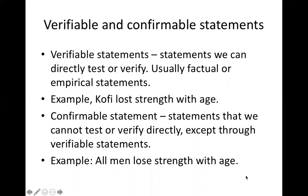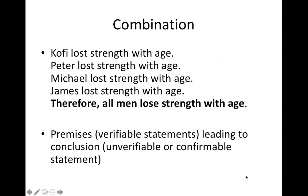Verifiable statements are statements we can directly test or verify; they are usually factual or empirical statements. Example: 'Kofi lost strength with age.' Confirmable statements are statements we cannot verify directly, except through verifiable statements. Example: 'All men lose strength with age.' In an inductive argument, the premises are verifiable statements and the conclusion is a confirmable statement — you can directly verify the premises but cannot directly verify the conclusion.